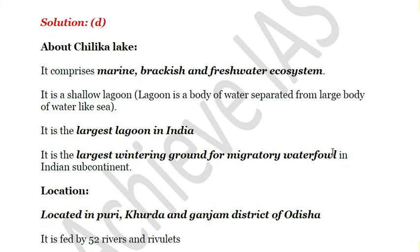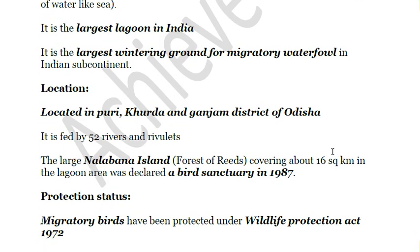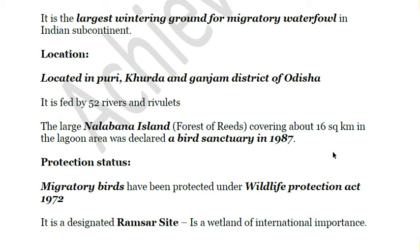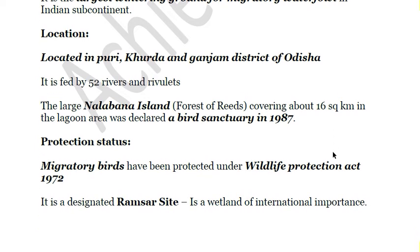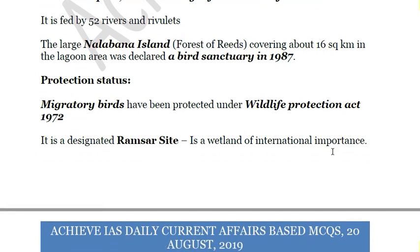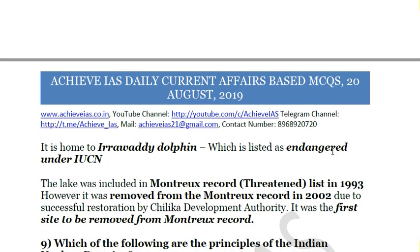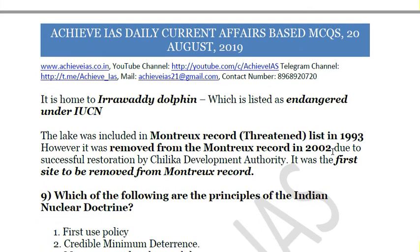Statements two, three, and four are correct. Chilika Lake is the largest wintering ground for migratory waterfowl in India. It was designated as the first Ramsar site in India. It is home to Irrawaddy dolphins, listed as endangered on the IUCN Red List. Chilika is located in Puri, Khurda, and Ganjam districts of Odisha, fed by 52 rivers and rivulets. It was the first lake in India listed under the Montreux Record and also the first site removed from it in 2002 due to successful restoration by the Chilika Development Authority. The answer is D — two, three, and four.